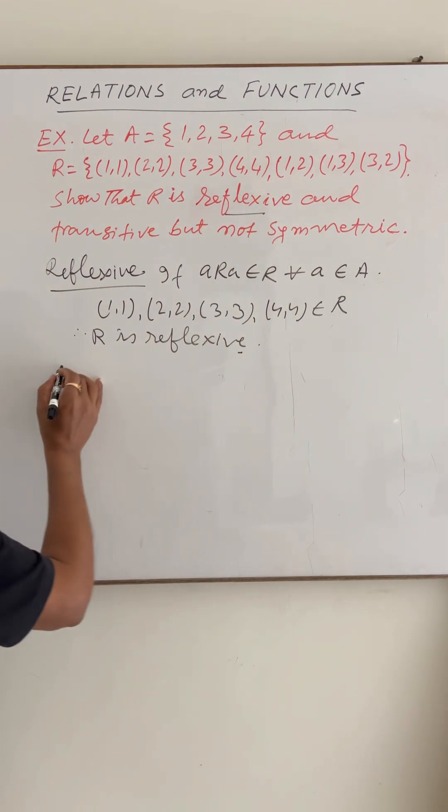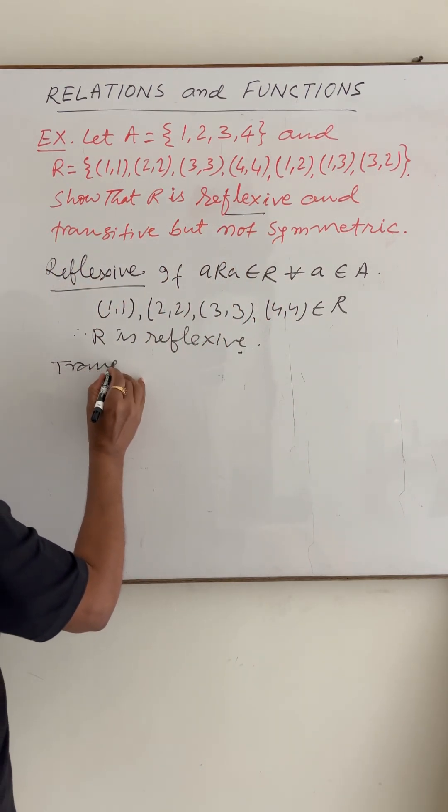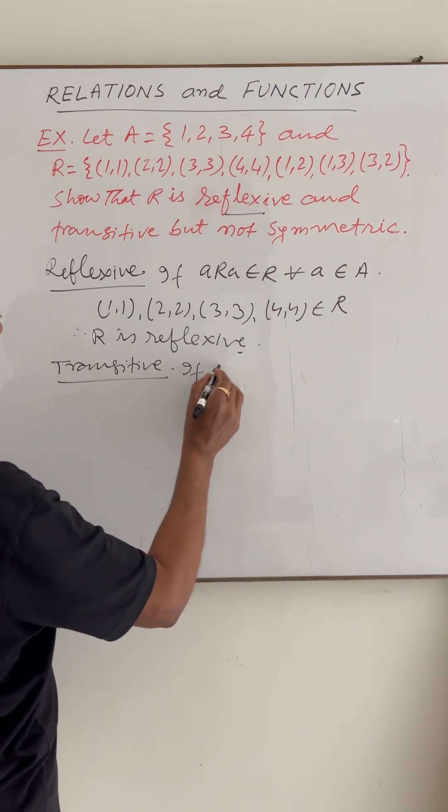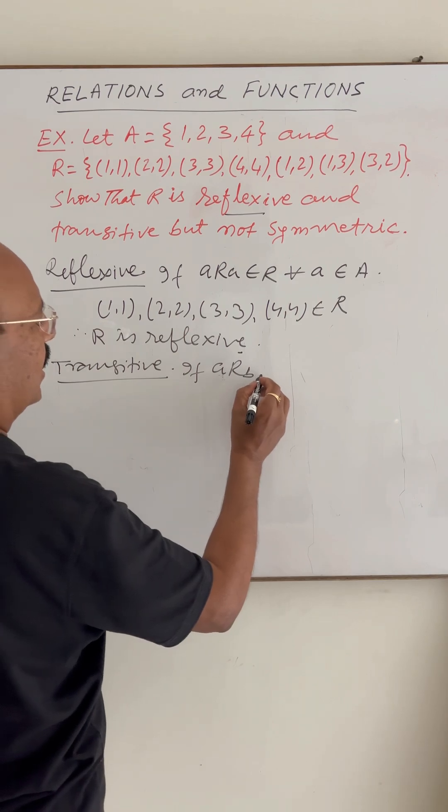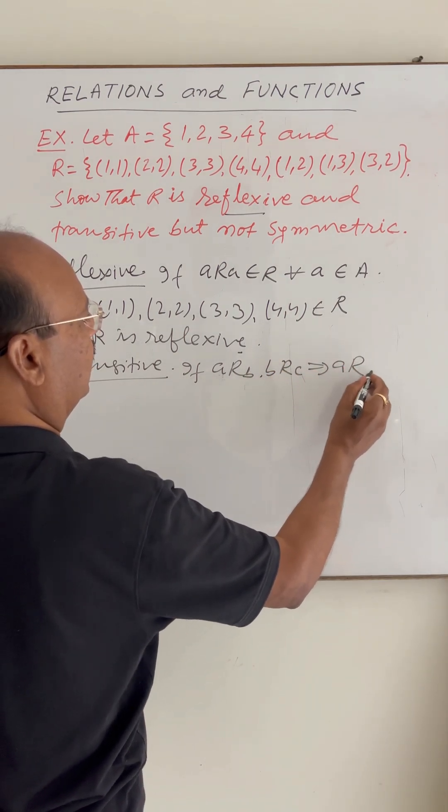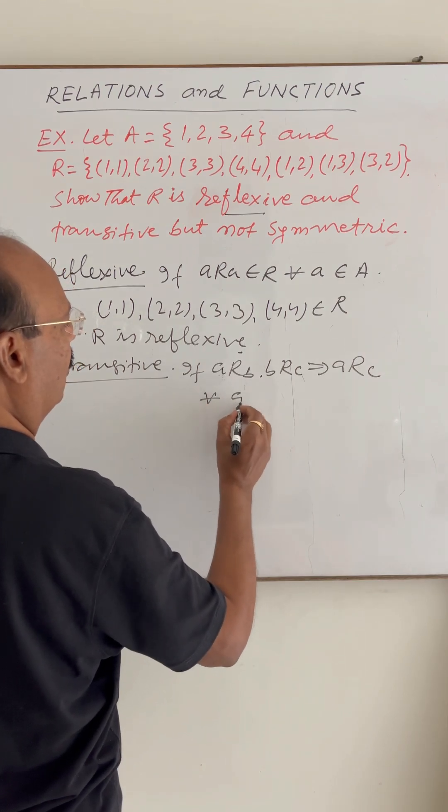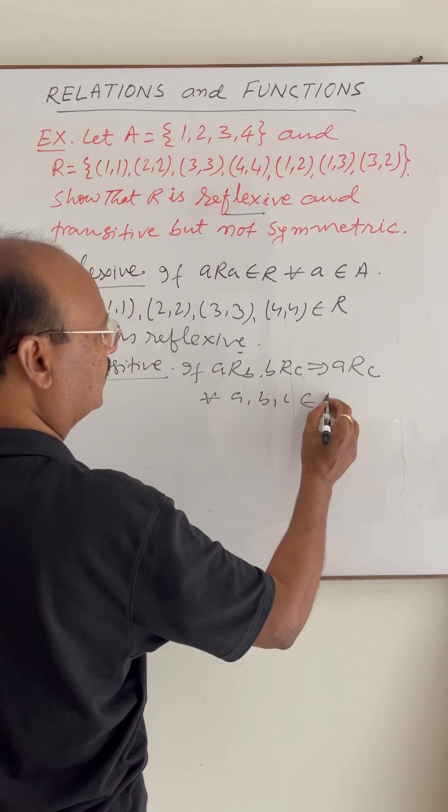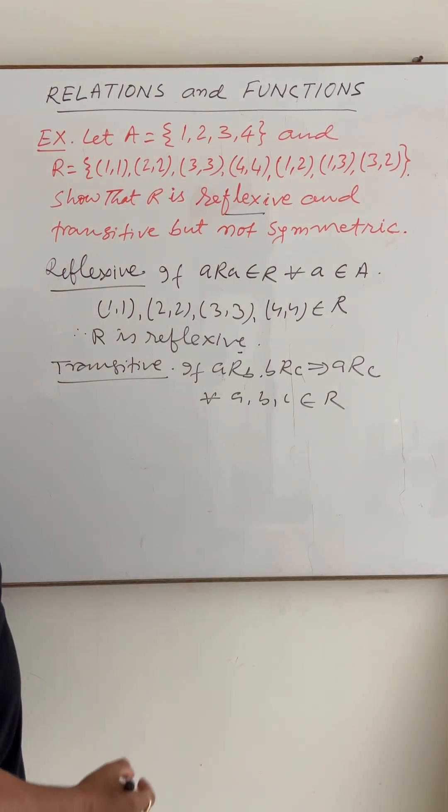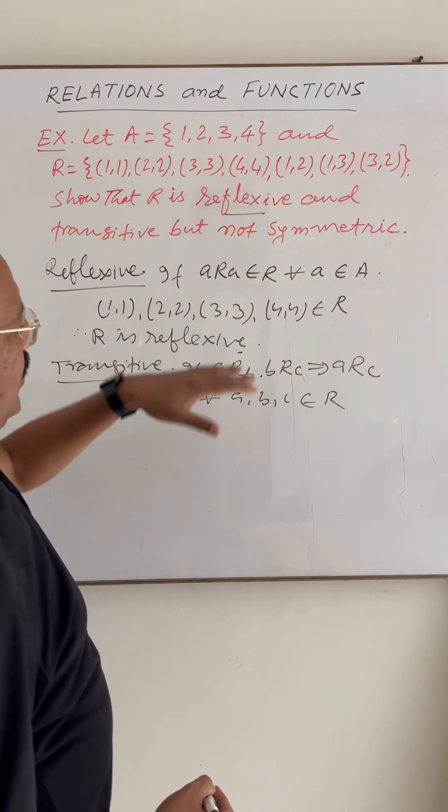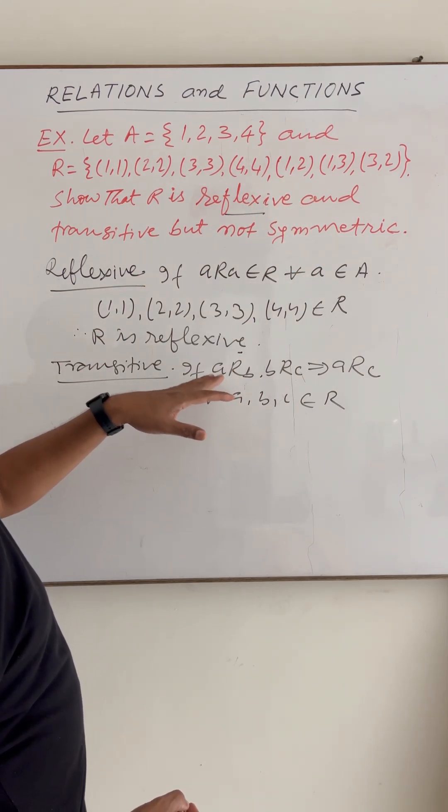Now we have to show that this is transitive also. So, a relation is transitive if A R B and B R C implies A R C for all A, B, C belonging to relation R.